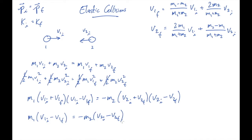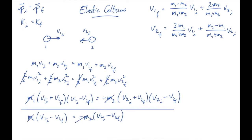When we divide, most things cancel: m1 cancels, m2 and the minus sign cancel, and the difference term (v1i - v1f) cancels with (v2i - v2f). All of that goes away, and we're left with: v1i + v1f = v2i + v2f. After one more line of algebra — moving initial terms to the left and final terms to the right — we get: v1i - v2i = -(v1f - v2f).